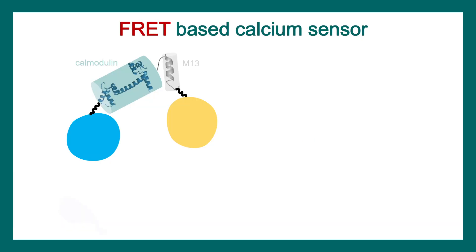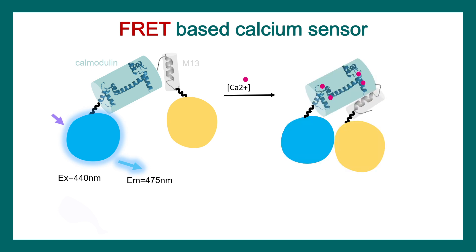There are FRET-based calcium sensors as well, which can determine the presence of calcium. This is another application of FRET. In this case, there is again a donor and acceptor pair, but they are linked together by calmodulin and M13 helix. The excitation wavelength is 440 nanometer and the emission is 475 nanometer. When calcium binds, these donor and acceptor come close to each other. So obviously, there could be FRET that is possible. And as a result, when we excite the donor with 440 nanometer, it emits at 530 nanometer instead of 475 nanometer. This shift is due to FRET.